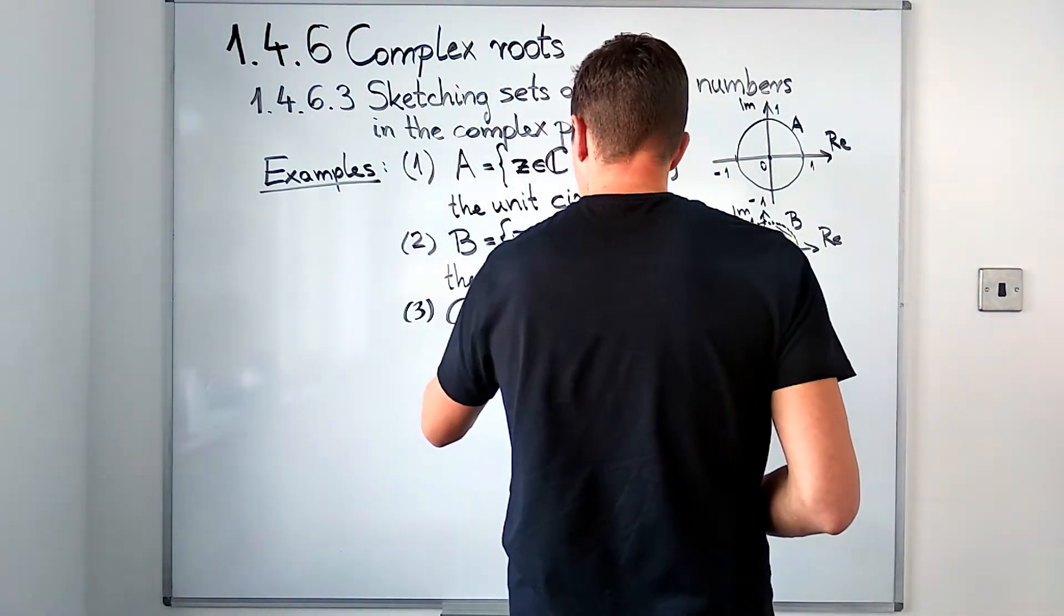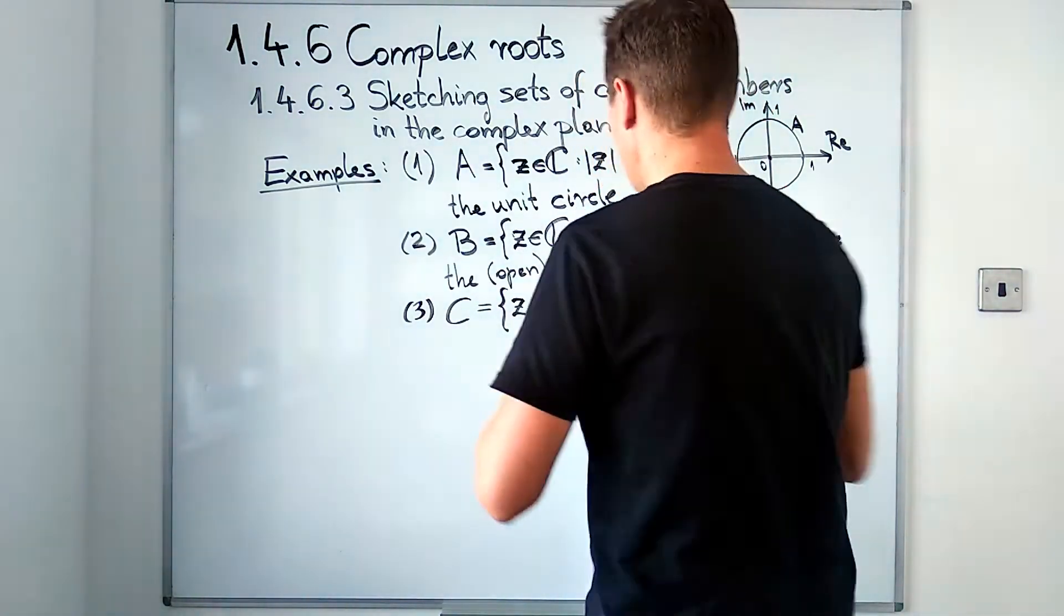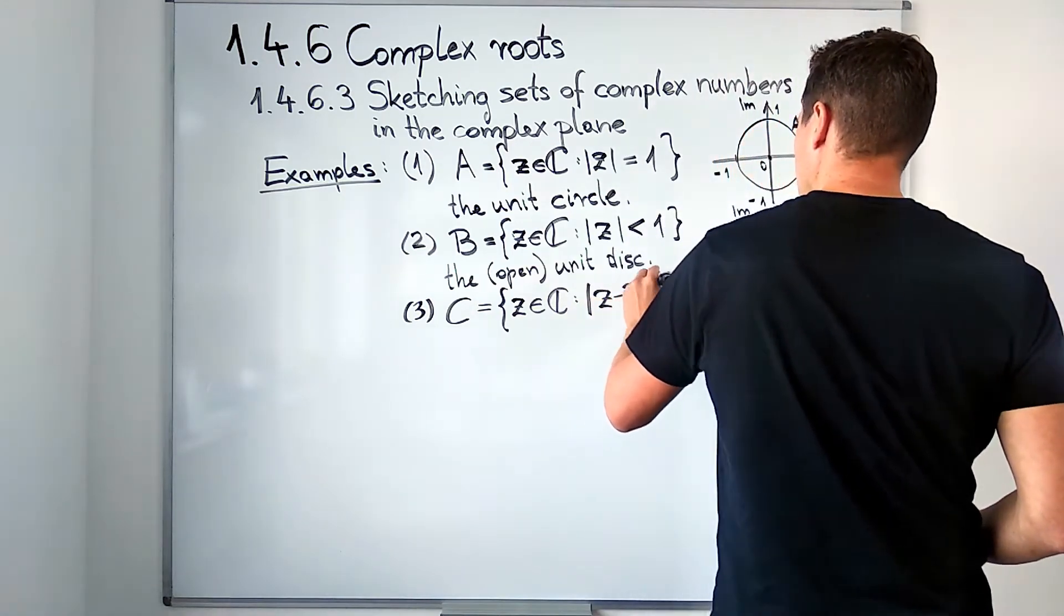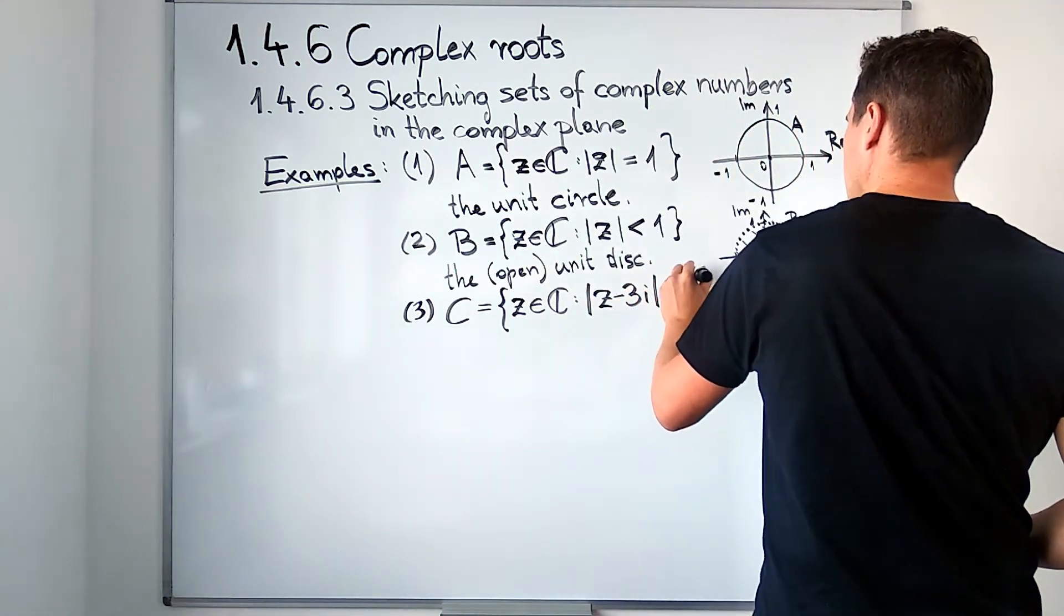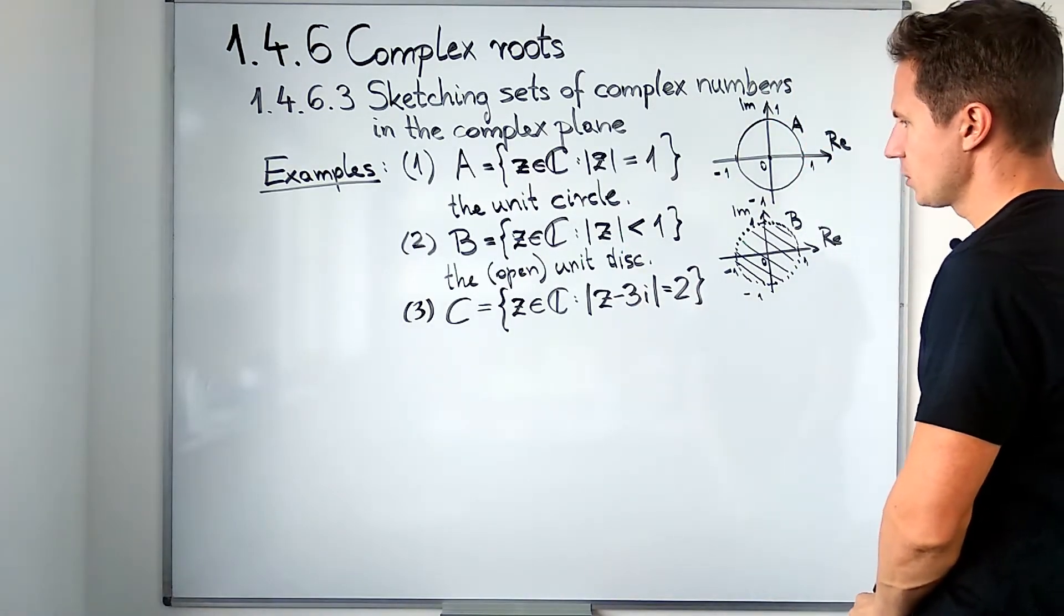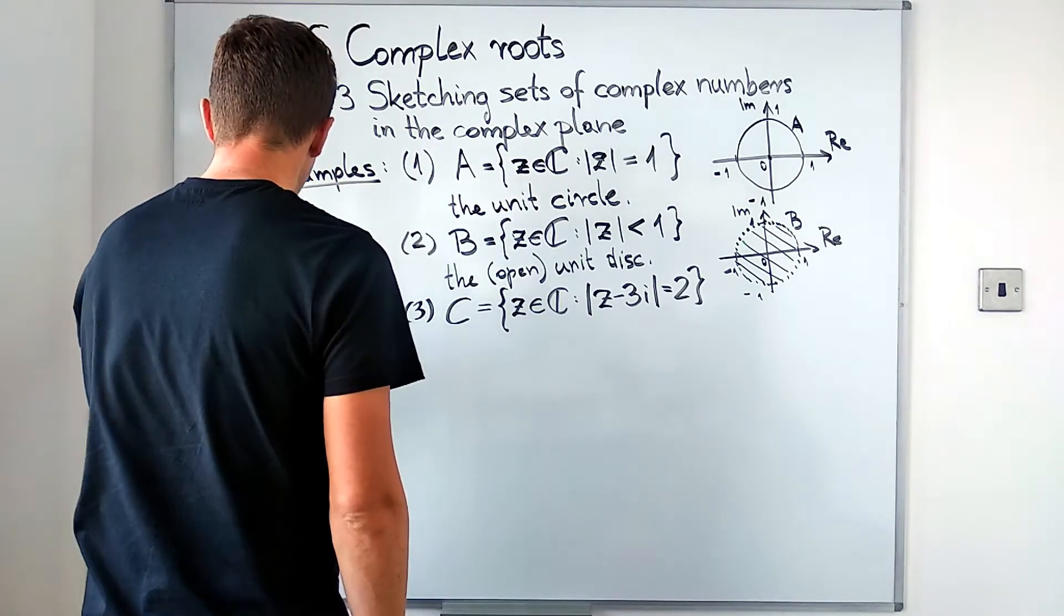Third set C, let's have it as follows. This is a set of complex numbers such that z minus 3i has the modulus 2.